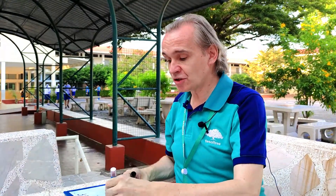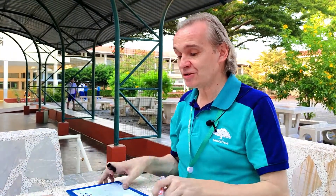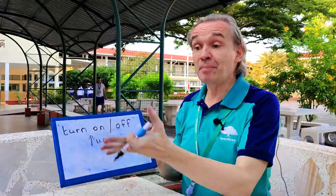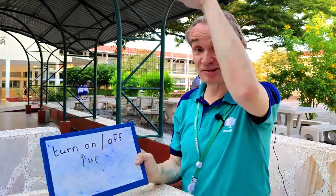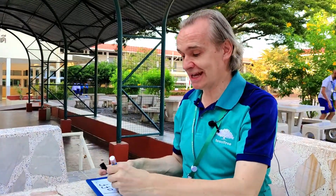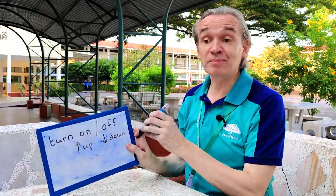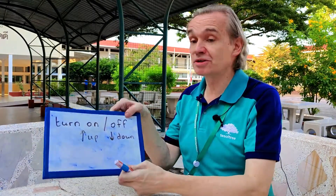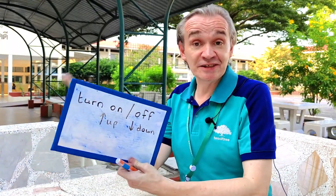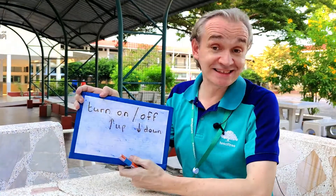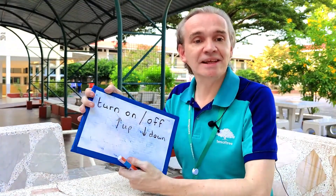Now, if you can't hear something and you want to increase the volume, we can say turn up. You turn up the volume so you can hear. Or, if it's too loud, you can turn down. And then, before you go home, you would turn off. For example, turn off the lights, not close the lights.